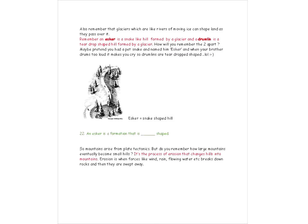Glaciers are like a river of moving ice, and when they move over land they shape it. An esker is a snake-shaped hill — remember, esker has an S in it, S for snake-shaped. A drumlin is a teardrop-shaped hill — think: if your brother is drumming too loud, it might make you cry, so drumlins are teardrop-shaped. So: esker = snake-shaped, drumlin = teardrop-shaped.